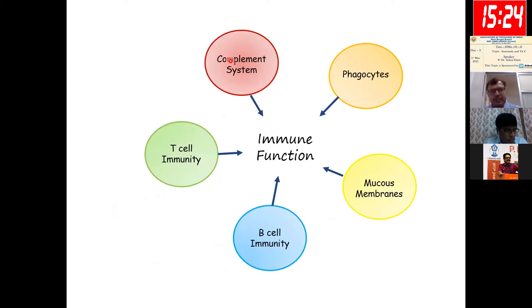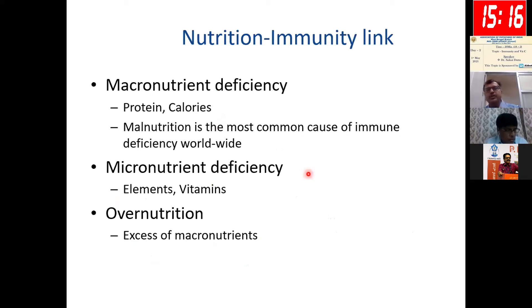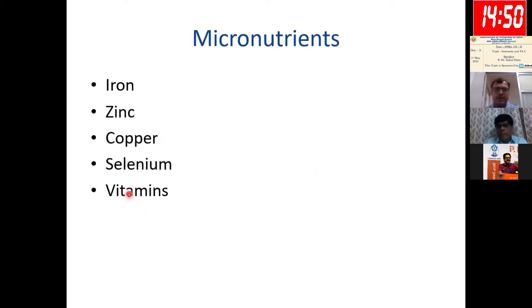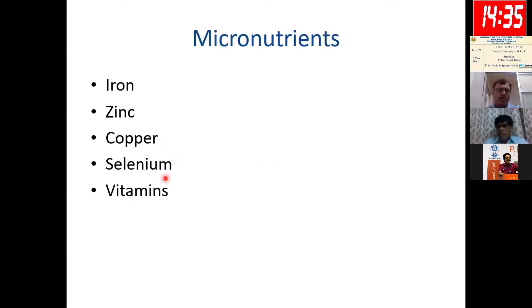Where does nutrition come into the picture of immunity? Malnutrition — including both macronutrient deficiency like proteins and calories, and micronutrient deficiency — is probably the most common cause of immune deficiency in the world. Micronutrient deficiency is our highlight today. Nearly all micronutrients are important, but among them iron, zinc, copper, selenium, and the vitamins are probably the most important.